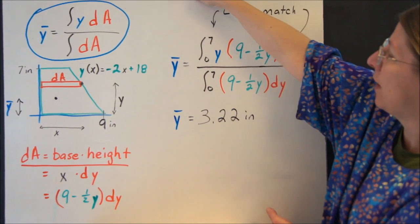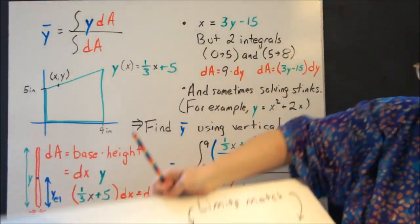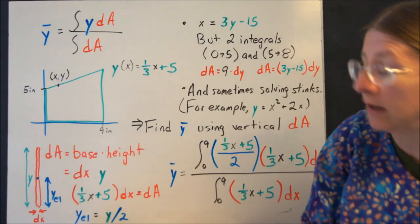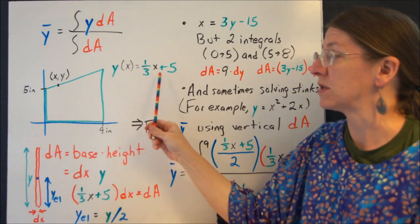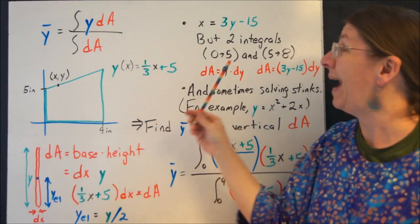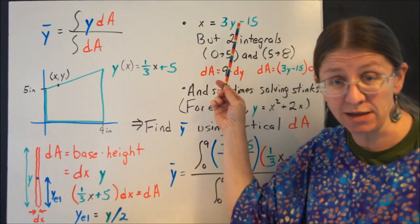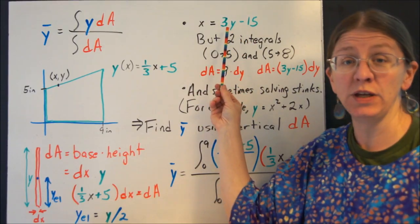But what happens if I want to look at actually my very first example that I had a minute ago, where I had y equals a third of x plus 5. Now I could, in fact, go ahead and solve, just like I just did, x equals 3y minus 15.